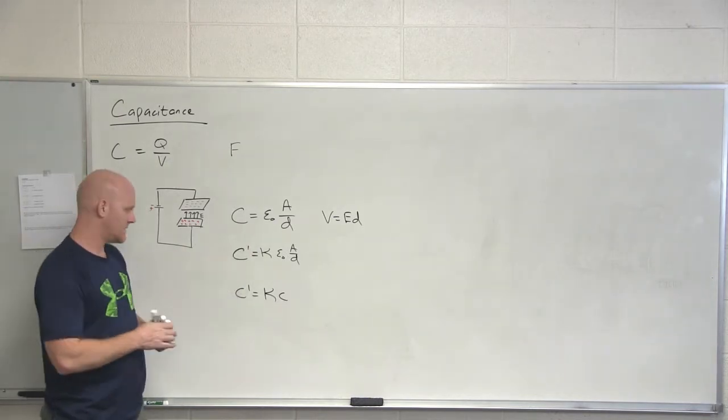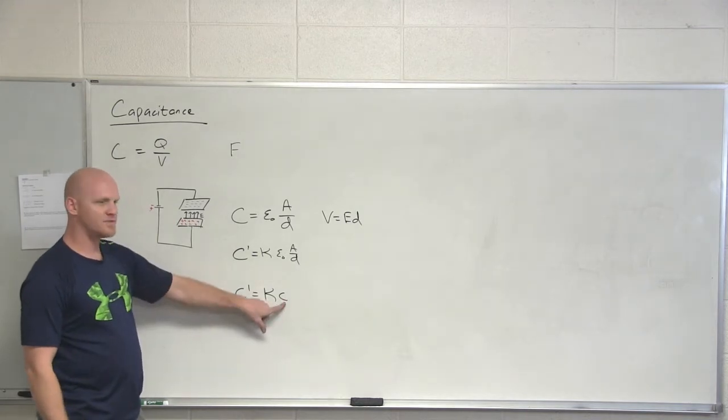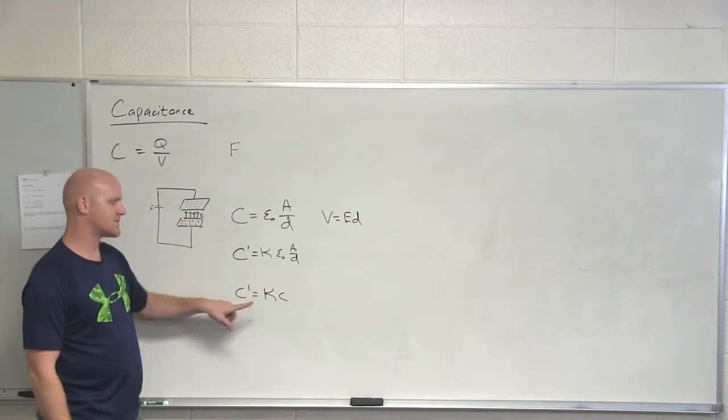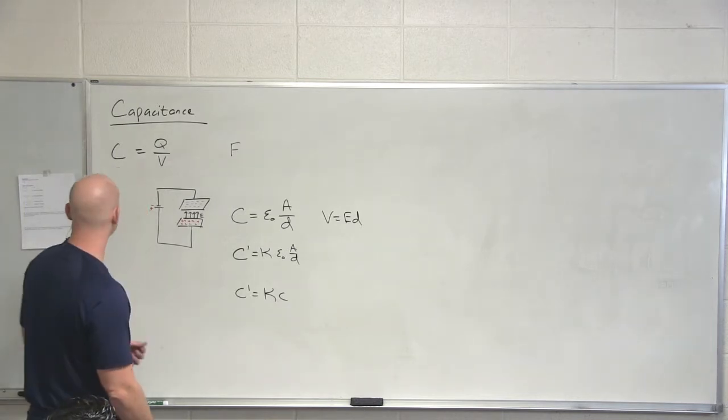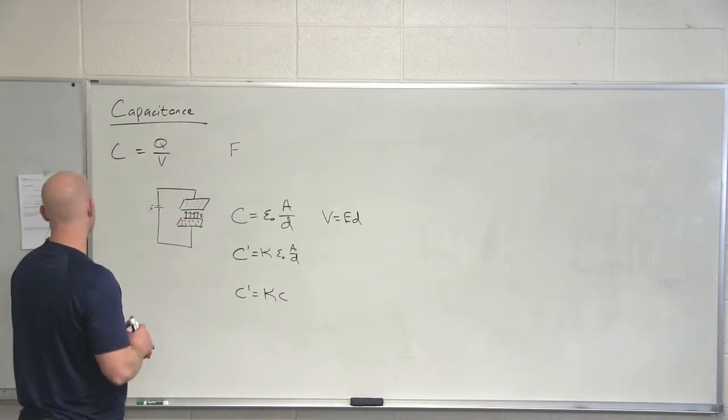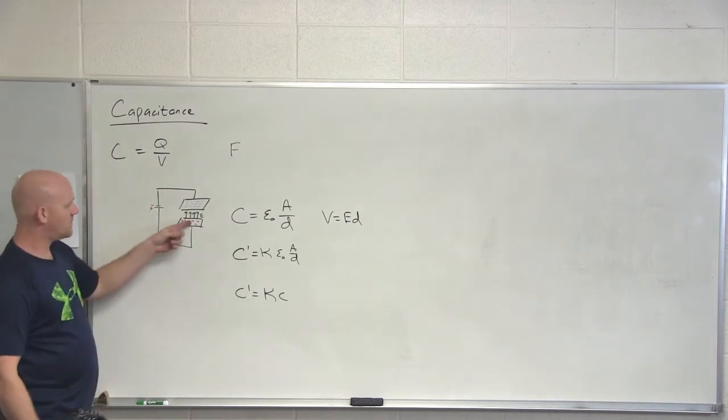Same difference. We'll call this then C prime, I guess, in that case, if we use that kind of terminology. So here's your baseline capacitance with no dielectric, multiply by the dielectric constant, now you get the new capacitance with that dielectric in place.